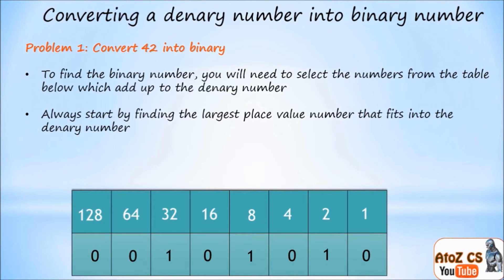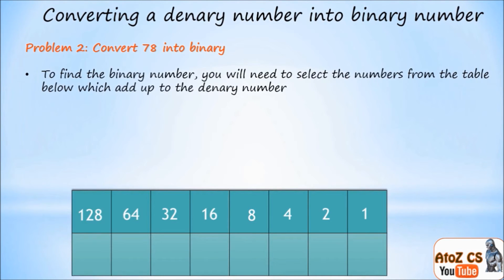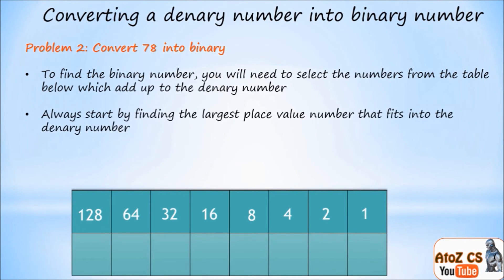Let's look at problem two: convert 78 into binary. We're going to use the same method — select the numbers from the table which will add up to the denary number, starting by finding the largest place value number. The largest that fits here is 64, so I'm going to put a one there.